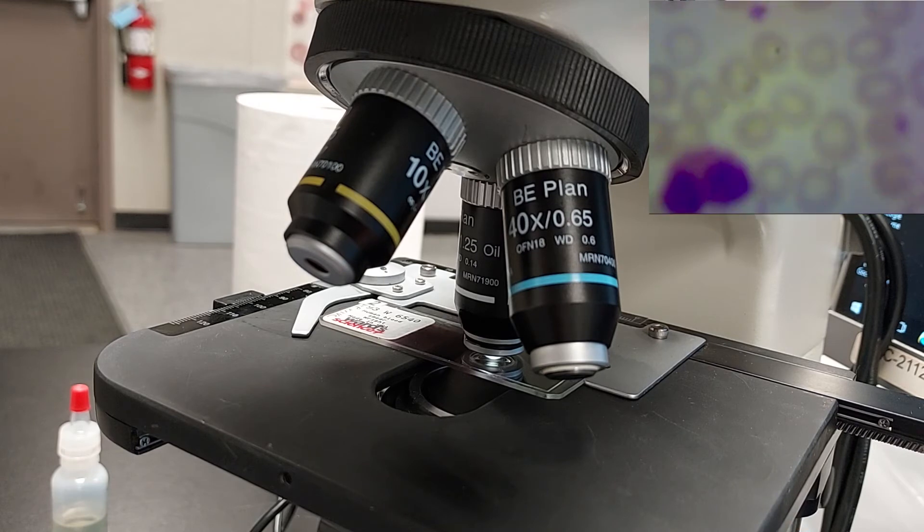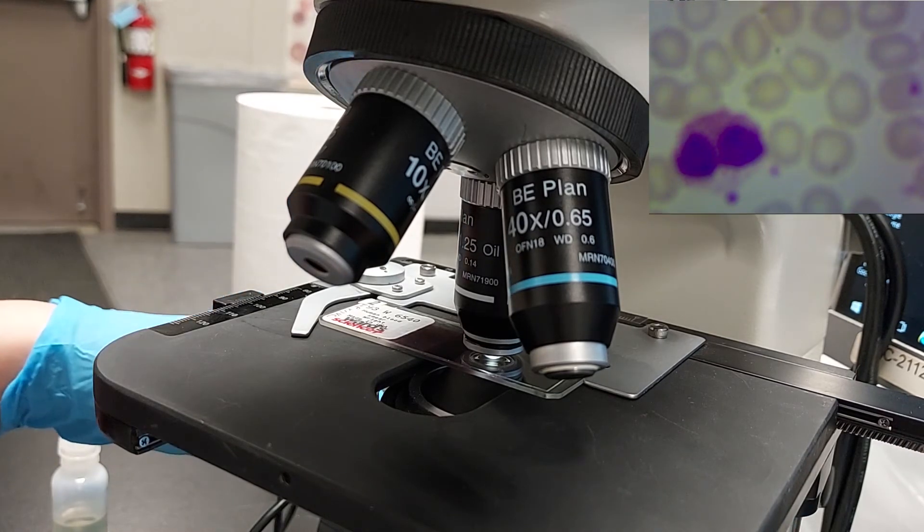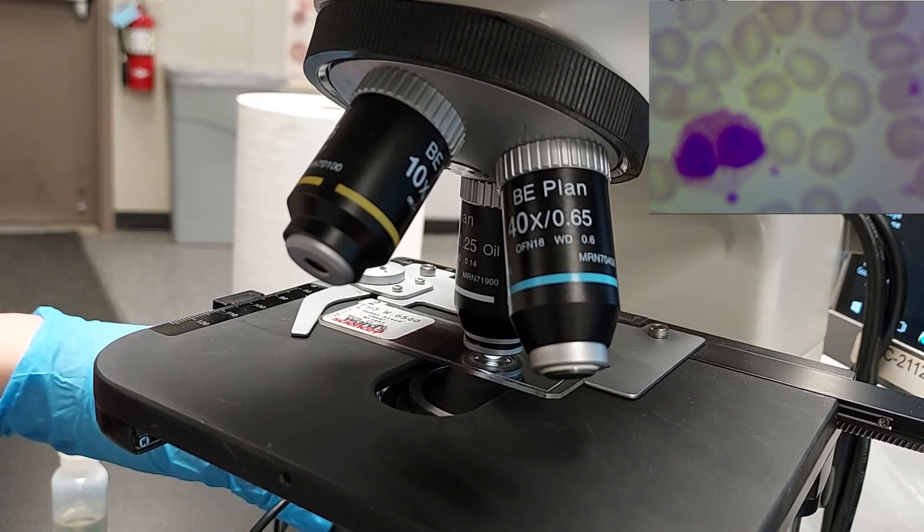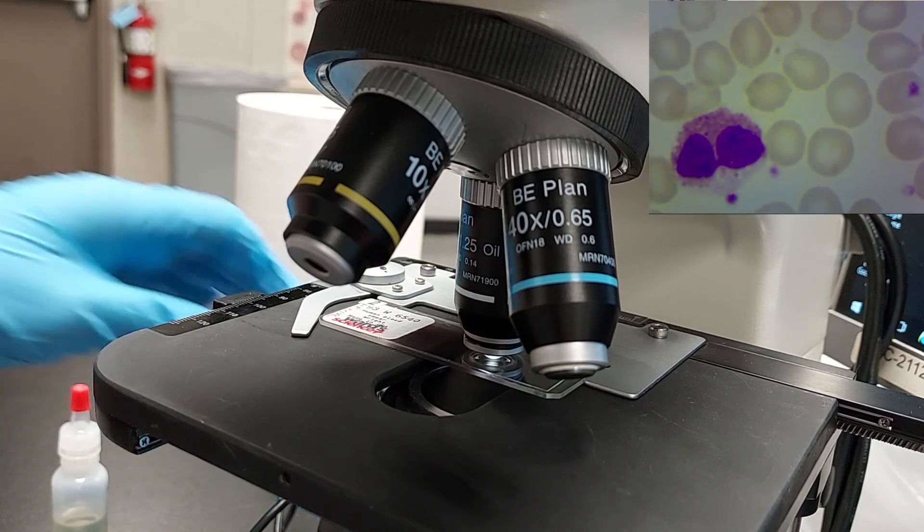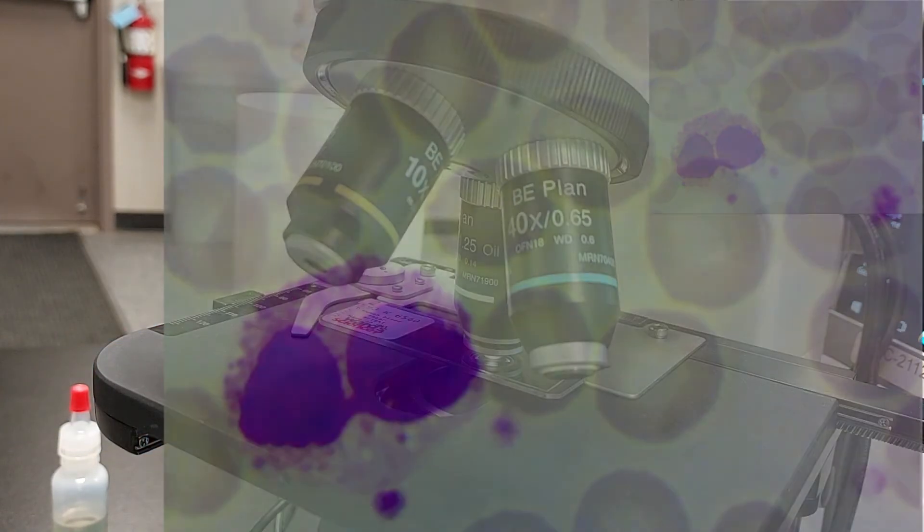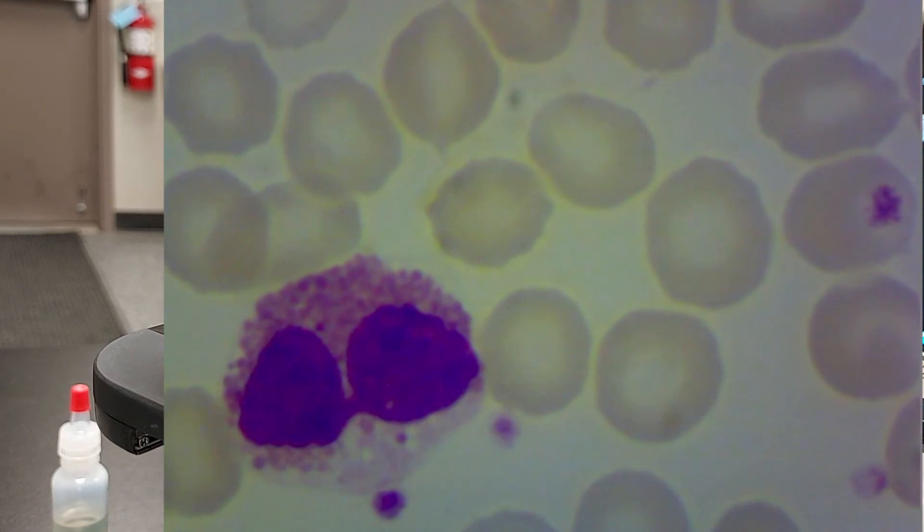We're going to see if we can find that eosinophil. Perfect, it's right here. As you scroll, make sure that you add oil. Look at all those beautiful granules. I can also see that bilobed structure. Let's say you've accidentally lost it and you need to start over.